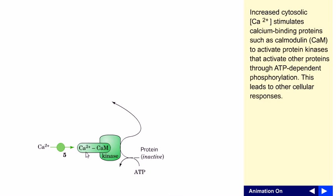The increased cytosolic calcium stimulates the calcium-binding protein calmodulin, designated as CAM. This calmodulin can activate protein kinases, which attach phosphate groups to desired proteins. These activated proteins can further produce cellular responses. That is the basic goal.